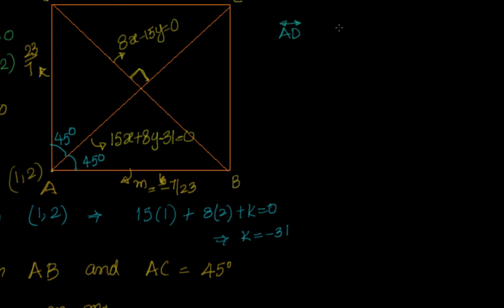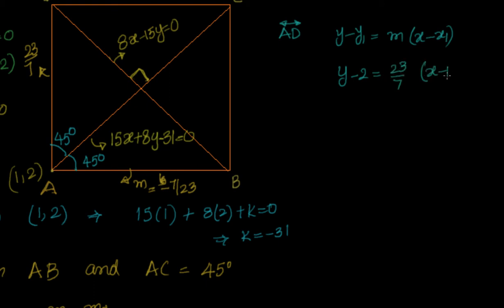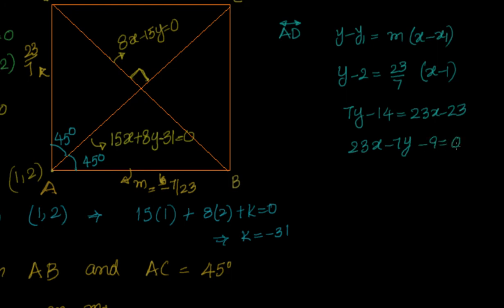For finding the equation of AD, we use the formula y minus y1 equal to M into (x minus x1), where the slope is 23 by 7 and it passes through (1, 2). So: y minus 2 equal to 23 by 7 into (x minus 1), giving 7y minus 14 equal to 23x minus 23, or 23x minus 7y minus 9 equal to 0. That's the equation of AD.